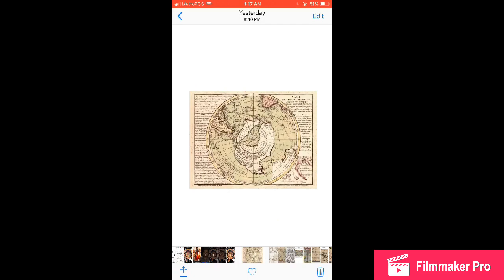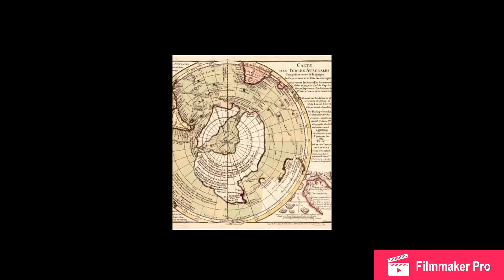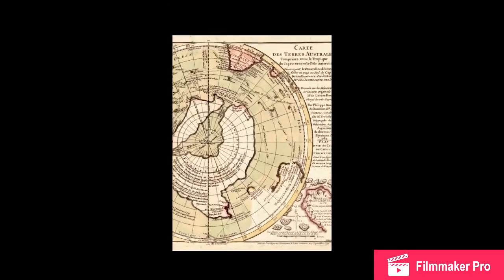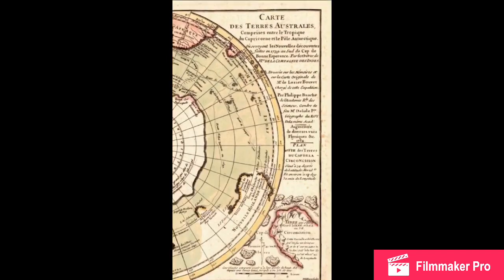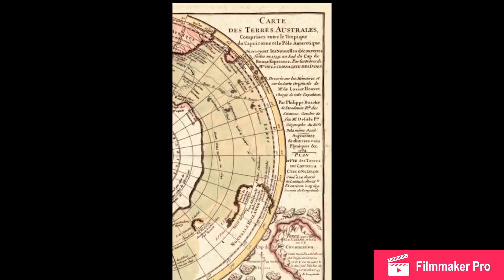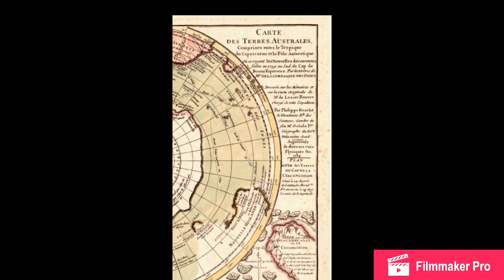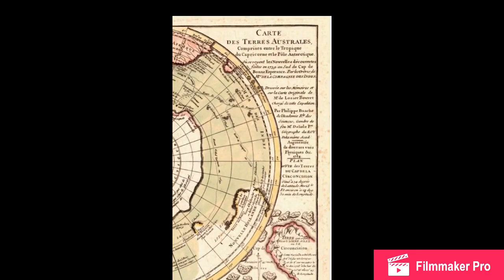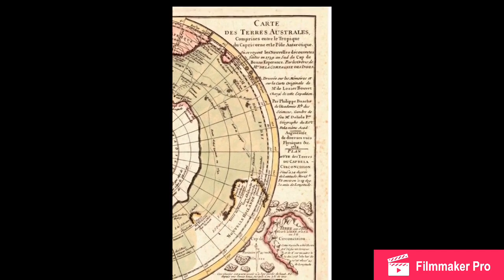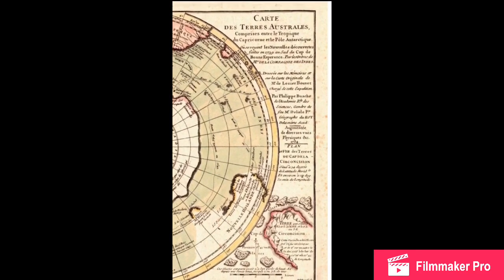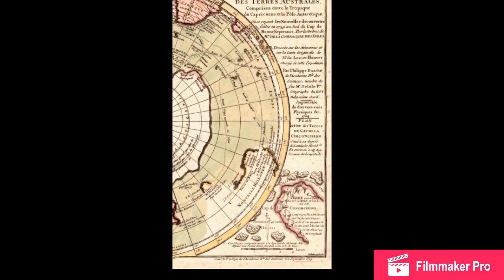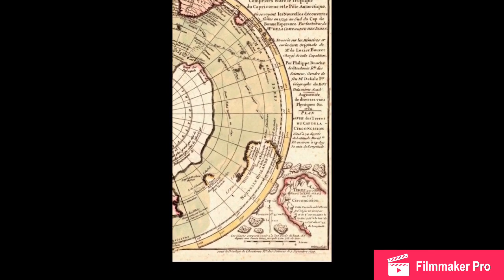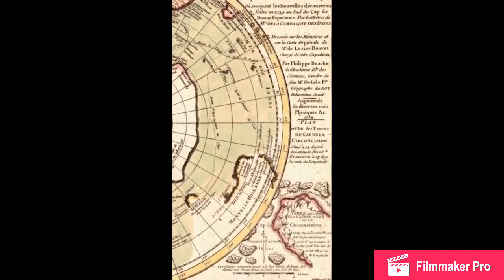Here we have the Piri Reis map. It says 'carte,' which we know comes from cartography, dealing with maps. It references Terra Australis, comprising the Tropics of Capricorn — the pole, Antarctica. Let's see what's down here.